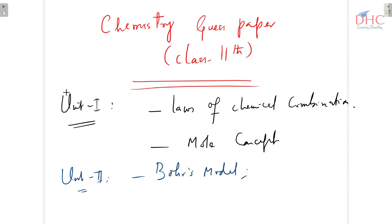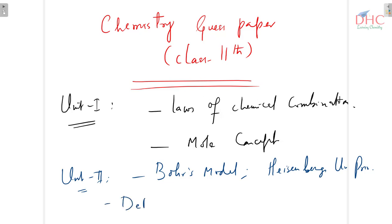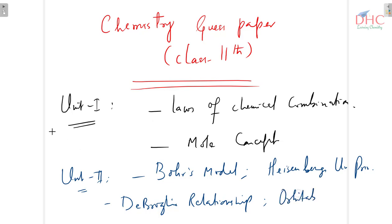In unit 2 we also have Heisenberg's uncertainty principle, the de Broglie relationship, and orbitals and electronic configuration.